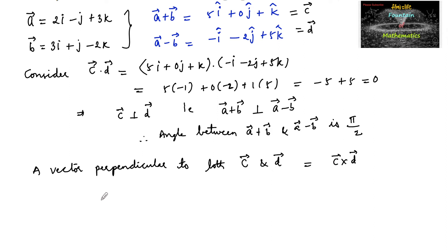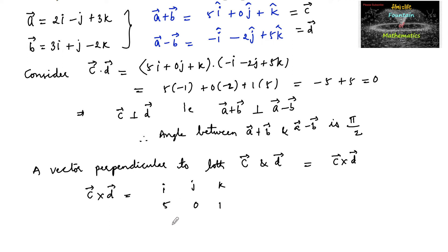Let us find the cross product. c cross d is equal to the determinant of i, j, k, where the vector c components are 5, 0, and 1, and the vector d components are minus 1, minus 2, and 5.